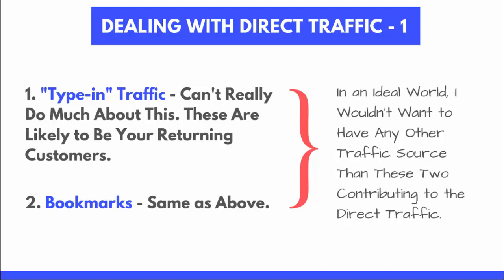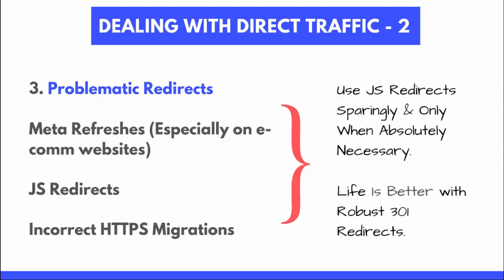For type-in traffic, you can't really do much — those visitors likely already know your brand or received an offline marketing piece. Bookmarks are similar; ideally you'd have that data, but it's not the end of the world. For problematic redirects — the JavaScript redirects, incorrect SSL setups, and meta refreshers — use JS redirects sparingly and only when absolutely necessary. As we like to say: life is better with robust 301 redirects, from a technical search point of view as well.